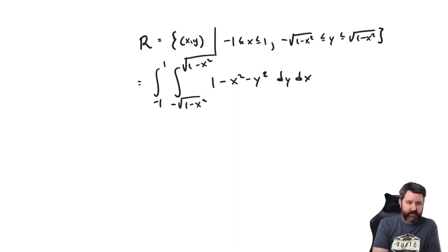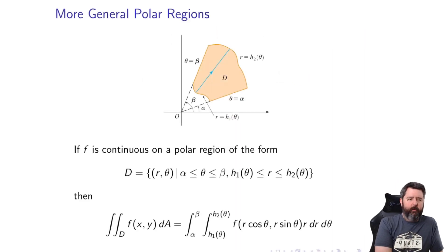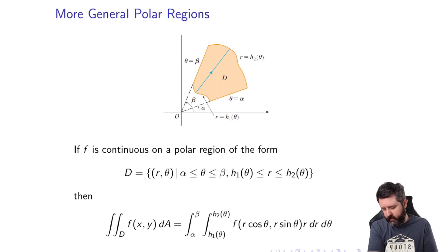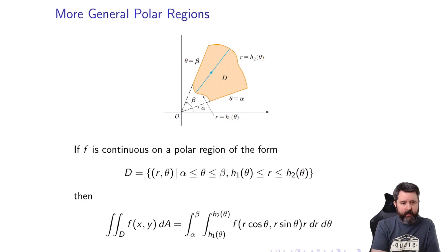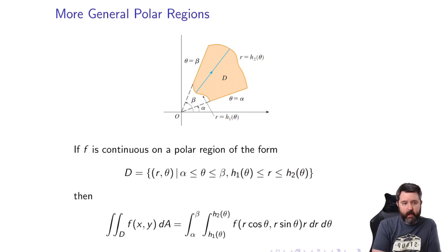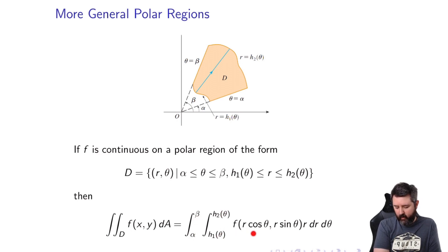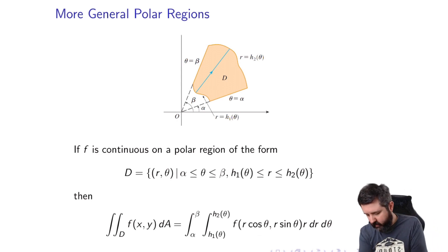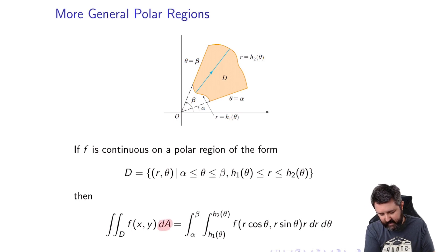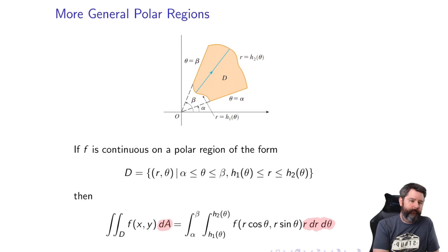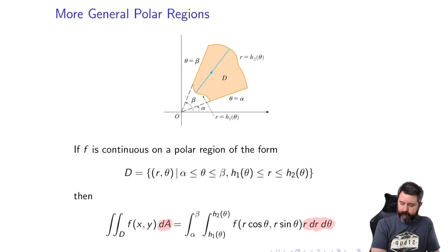We can also have more general polar regions. A general polar region D consists of all points (r,θ) where θ is between α and β, and r lies between two functions h₁(θ) and h₂(θ). To integrate f(x,y) over D, we get an iterated integral from α to β, from h₁(θ) to h₂(θ), of f(r cosθ, r sinθ)·r dr dθ. Remember: dA becomes r dr dθ, not just dr dθ.